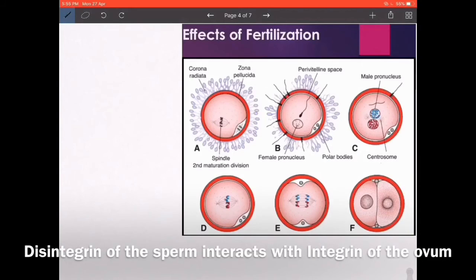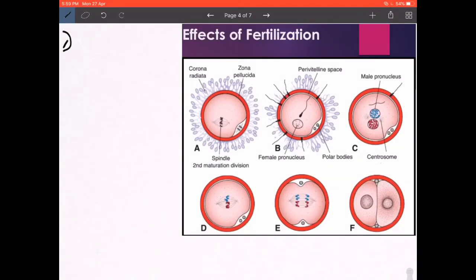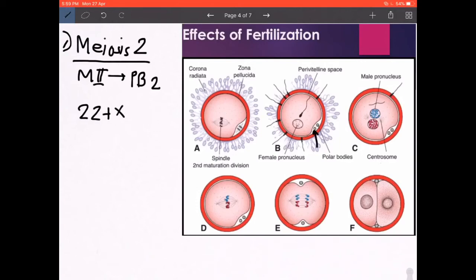The effects of fertilization: Point number 1, completion of meiosis 2 of the secondary oocyte. If you saw the previous lecture, the secondary oocyte is stuck in metaphase 2 of meiosis 2, and it undergoes completion only once fertilization occurs. It is the calcium depolarization that helps in completing this metaphase 2 so that the second polar body is extruded outside, as you can see here. Now you've got a haploid chromosomal content of 22 plus X, which becomes more enveloped and constricted to form the female pronucleus.